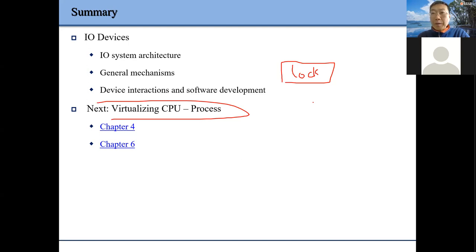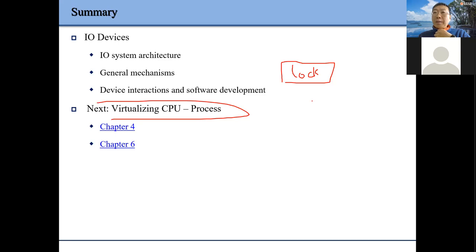We'll talk about this later. Generally speaking, remember we talked about concurrency issues — we had two threads counting, and we have a global variable count. Because each operation is not atomic, the result is unpredictable and depends on the access sequence. Whenever we have a shared global variable accessed by multiple threads, we need protection.